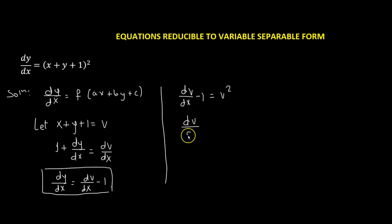which gives us dv over dx equals to 1 plus v squared. Now, separating the differentials, we have dx equals to dv over 1 plus v squared.